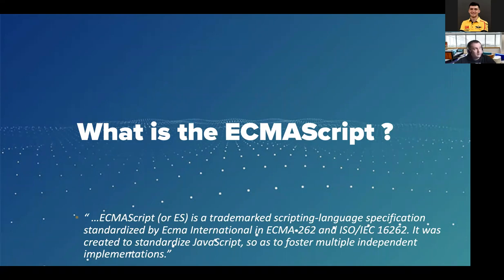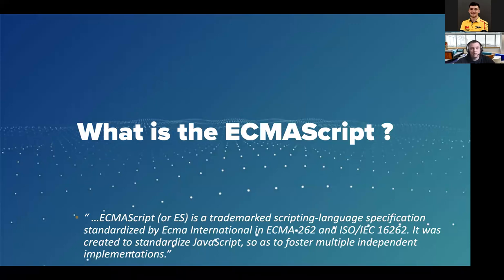The next one, ES6, was released in 2015. In 2015 we found a lot of new features like arrow functions, classes, etc. After that, ECMAScript confirmed that it will be a year-based specification. From 2015, each year we have a new release of this specification, generally in June of each year.